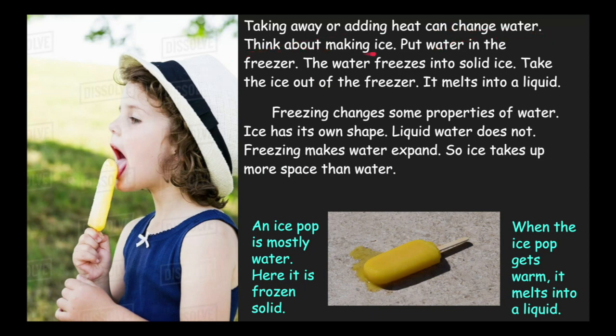Taking away or adding heat can change water. Think about making ice. When I make ice in my kitchen, I have a little ice cube tray and I fill it up with water — regular liquid water. Then I put it inside the freezer, so I'm taking away any heat, I'm freezing it. If I wait a couple of hours, the water inside my ice trays would be frozen — they would be ice cubes, which means they would be a solid.